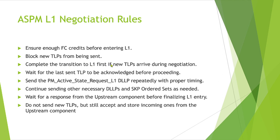If new TLPs arrive during the L1 transition negotiation, the endpoint will first complete the L1 transition, then after exiting L1 it will proceed with the new packet — otherwise it needs to stop the L1 negotiation execution to send the packet. It needs to complete the L1 transition first, then after exiting L1 process the new TLPs. Also, it must wait for the last sent TLP to be acknowledged before proceeding, to ensure the packet was received correctly.